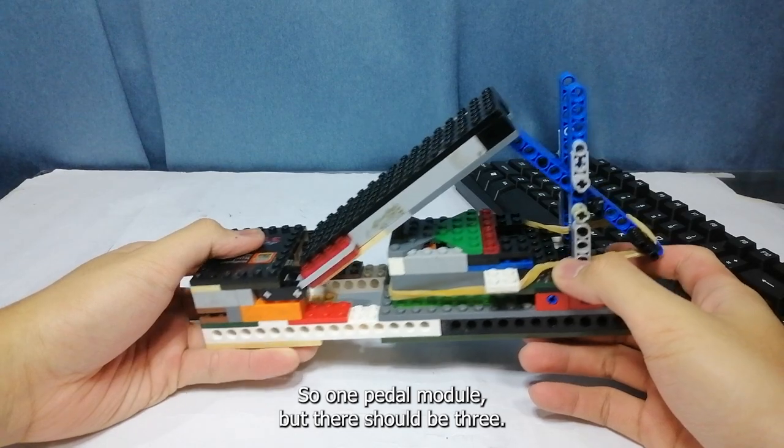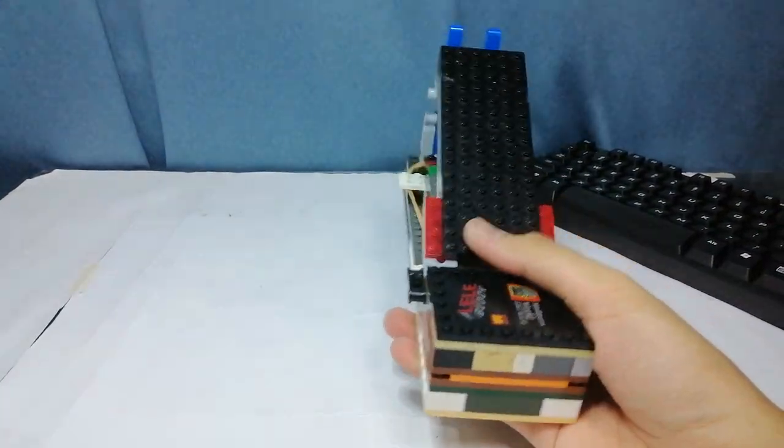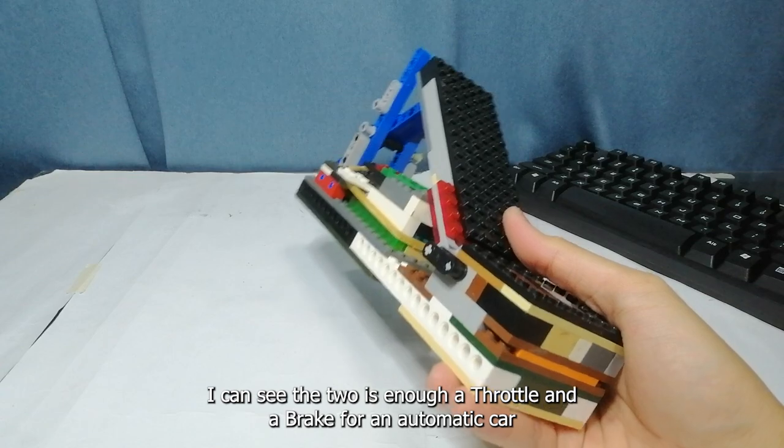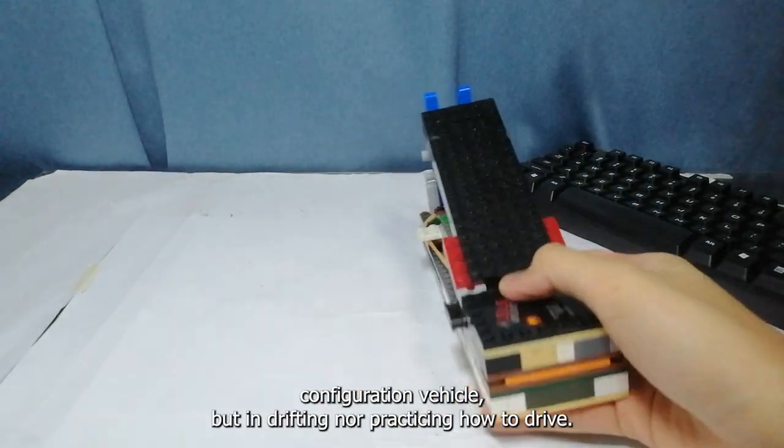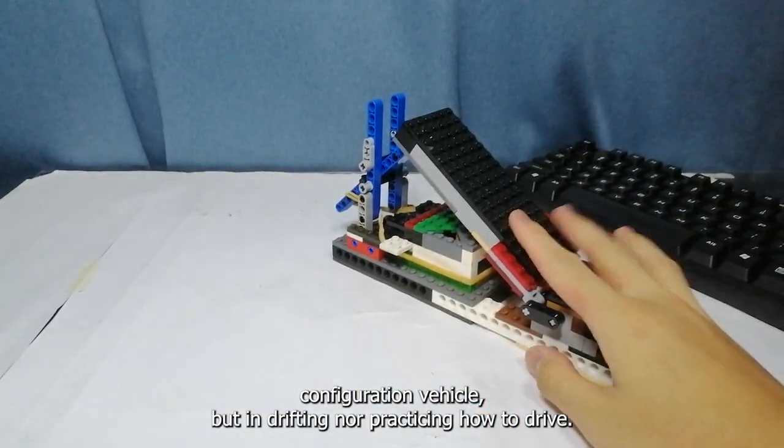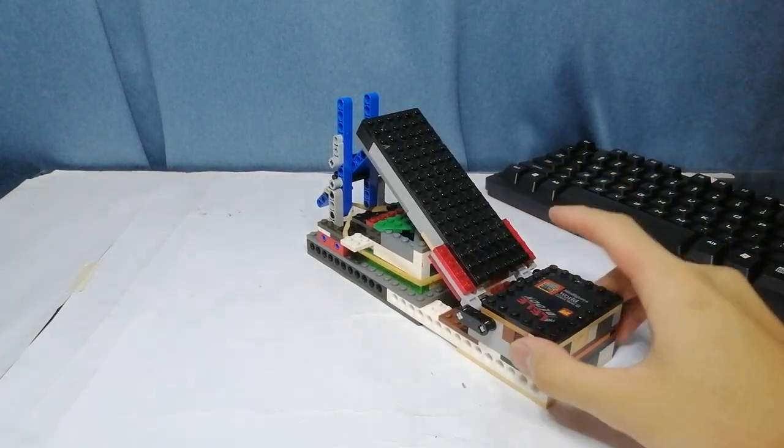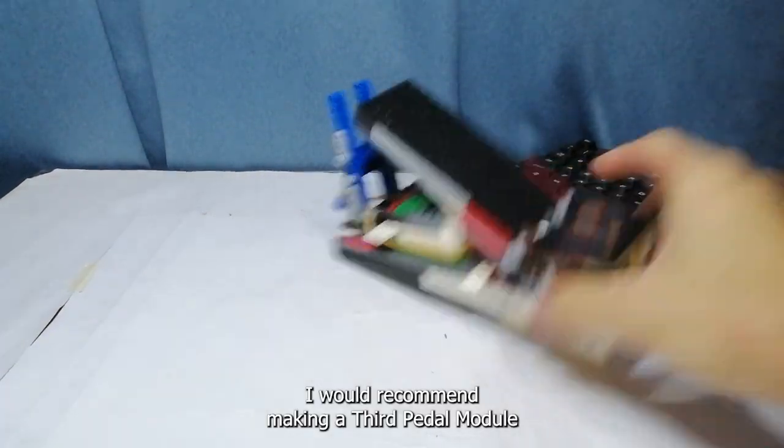So, one pedal module, but there should be three. I can say that two is enough, a throttle and a brake for an automatic car configuration, but for drifting or practicing how to drive, I would recommend making a third pedal module.